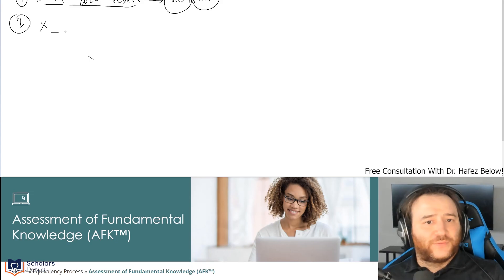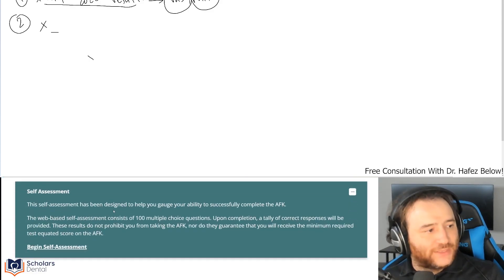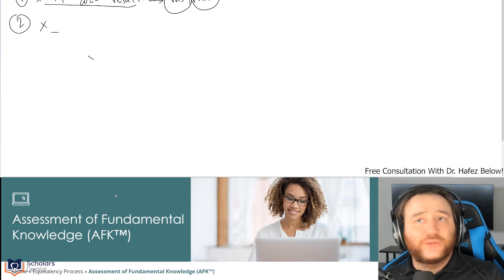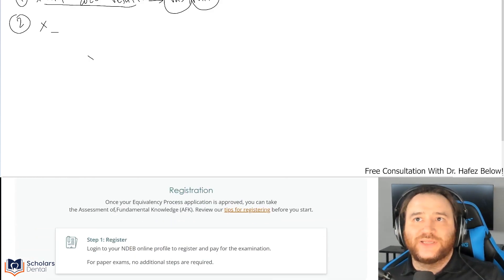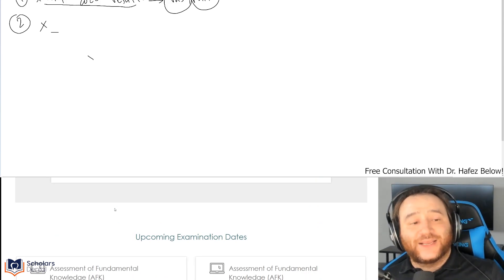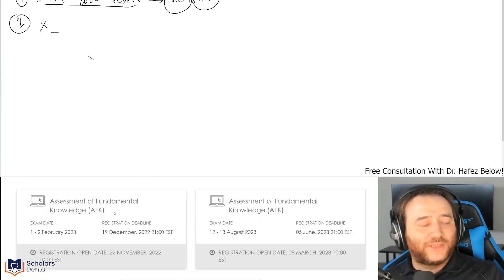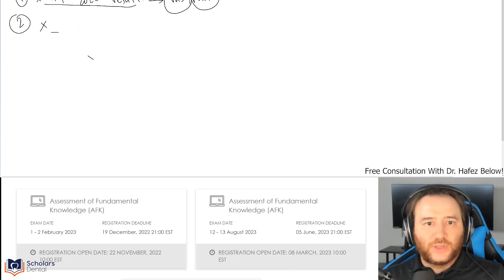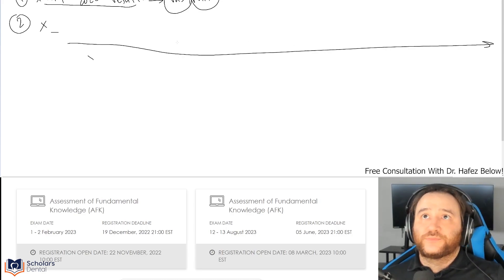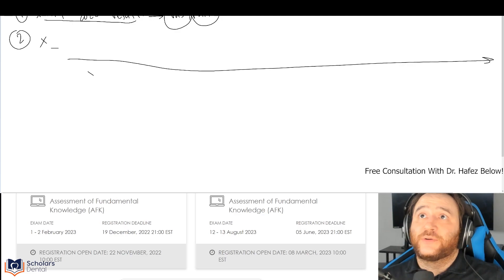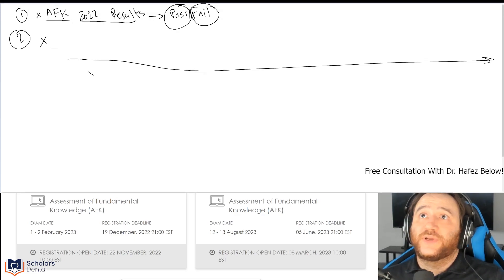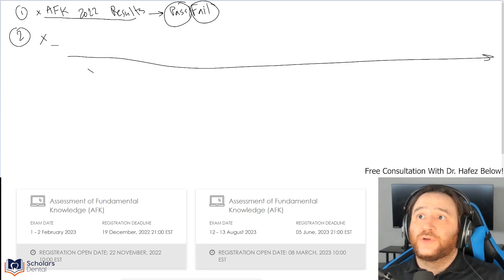So that is point one. Point two, we have, again, something about the NDEB, the AFK exam, which is you don't find easily on the website. But if you go to the AFK part and you scroll down, you could see that the registration for the next AFK, not just the immediate next, the one after has been established. Isn't that awesome? Knowing this early. So we know for the FEB exam, if we draw a line here.